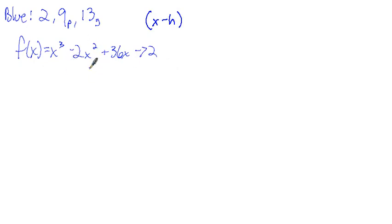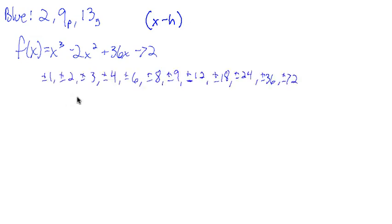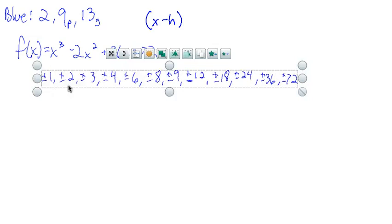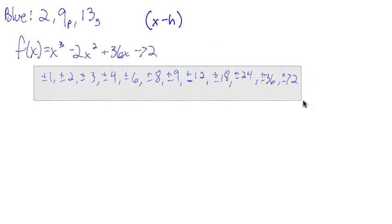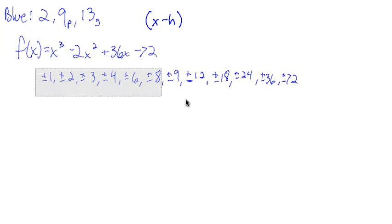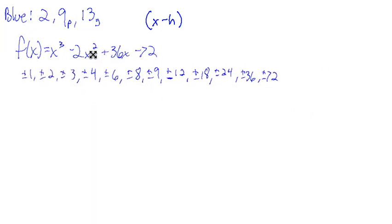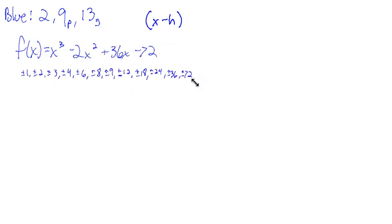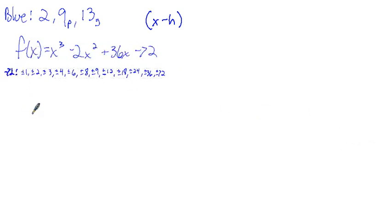I'll show you what I thought you would do, and then I'll show you what a lot of people did do — all of it is good and great. What I had intended was: these are the factors of negative 72, the constant. Those are the factors of the constant negative 72. Then you'd use the rational zero test, find the factors of 1 — which are just plus or minus 1 — and then we find that our list of possible zeros is just the factors of negative 72.